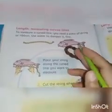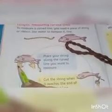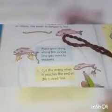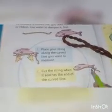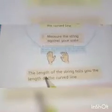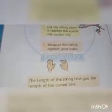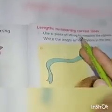Students, to measure a curved line with string: first, place the string along the curved line. Then measure from the first edge to the last edge. Then cut the string and measure that part of the string against the scale. The length of the string tells you the length of the curved line. Now let's go to page number 131 — length: measuring curved lines.